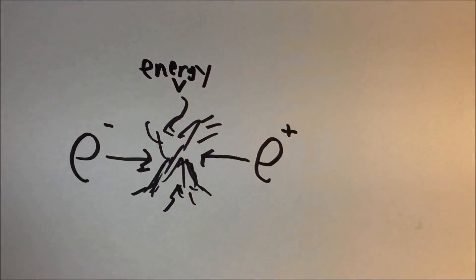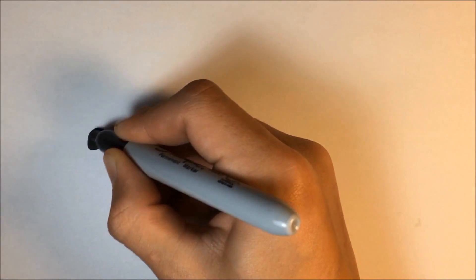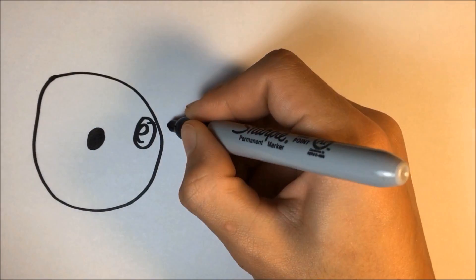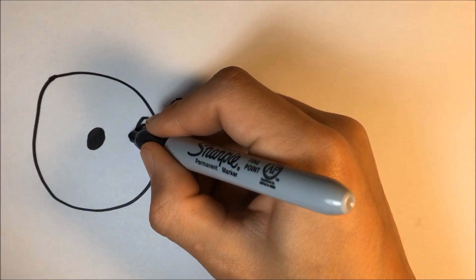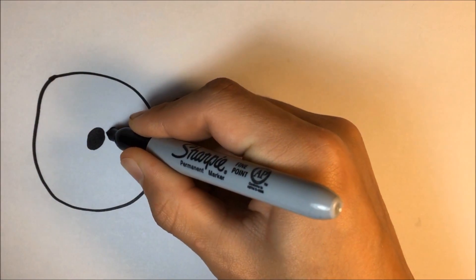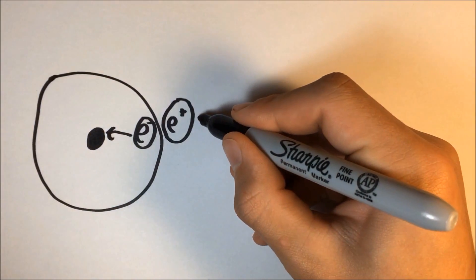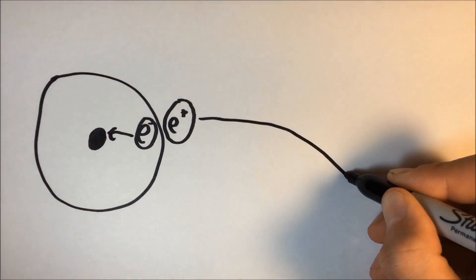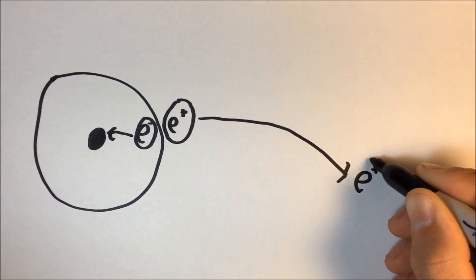But going back to our diagram of the black hole, if these two particles are created right on the event horizon, one of them will be pulled back into the black hole before it can annihilate into the other. This leaves the other particle free to leave the black hole. This is what Hawking radiation is and how it is created.